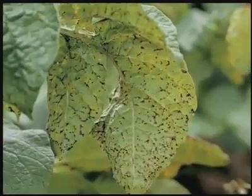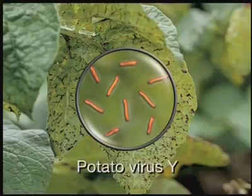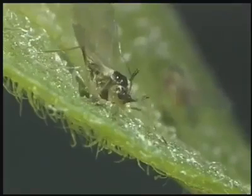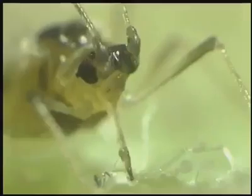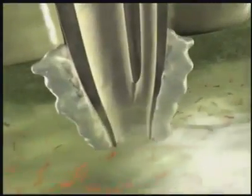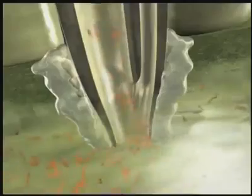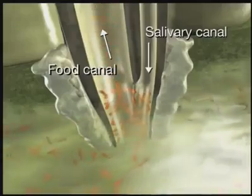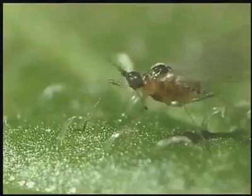Some plants in the potato field exhibit dark brown spots on the undersides of their leaves. These plants have been damaged following infection with potato virus Y that has entered them from infected seed tubers. When winged individuals of the green peach aphid land on the virus-infected potato plants, they start with feeding probes. In doing so, they also, with their stylets, inevitably take up potato virus Y particles from the plant's epidermal cells. The virus particles become attached to the epicuticular lining of the food canal. The aphid has turned into a virus vector.